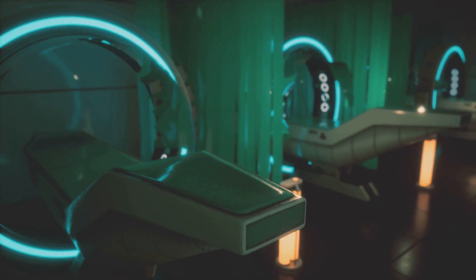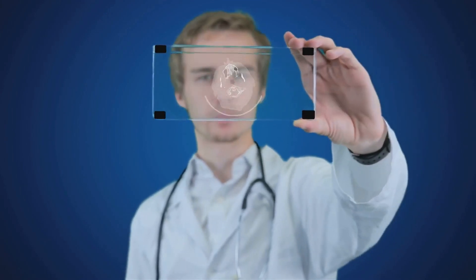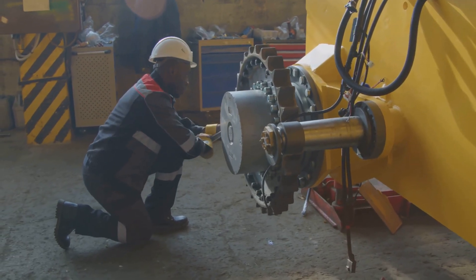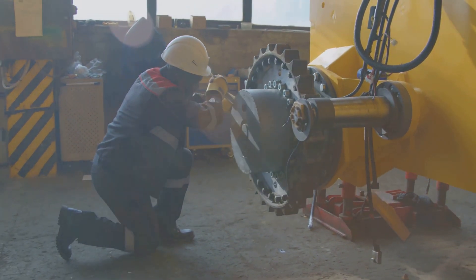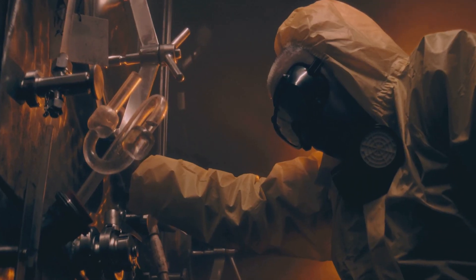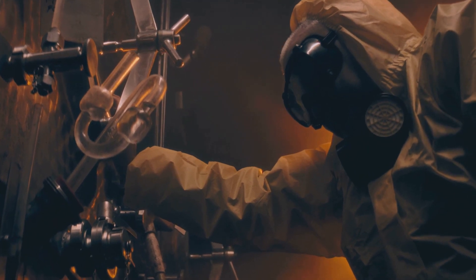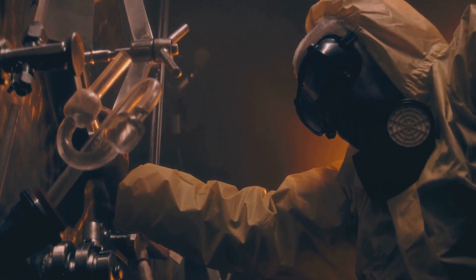It's also used in a process called neutron radiography, which is like an x-ray but uses neutrons instead of light. This can be used to inspect engine components or other complex machinery for internal flaws that might otherwise be invisible. These uses are highly specialized but show the versatility of this remarkable element when handled with care.